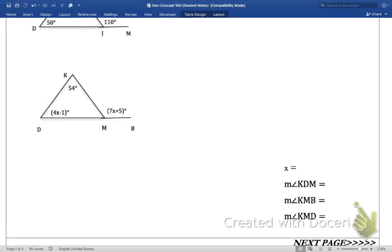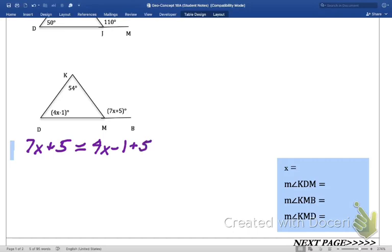Here's one with some algebraic expressions on it. We can't go find the angles right away first. We're going to have to use a little bit of algebra, and we can do that because you're good at that. So exterior angle theorem says this: the exterior angle, the 7x plus 5, is going to be equal to the sum of the two remote interior angles. By remote I mean the angles that are farthest away from 7x plus 5. So sum means add, so 4x minus 1 plus the 54. That's the equation to set things up.